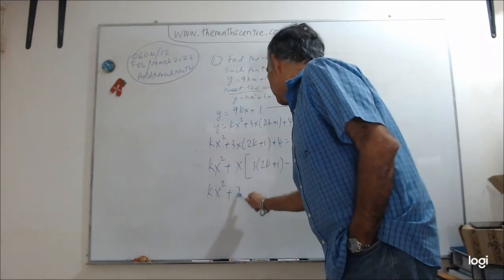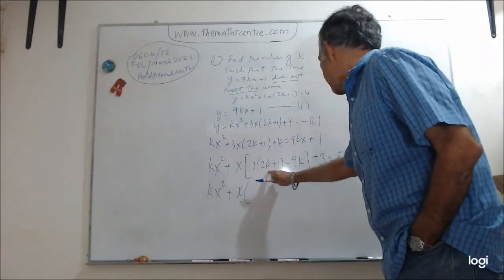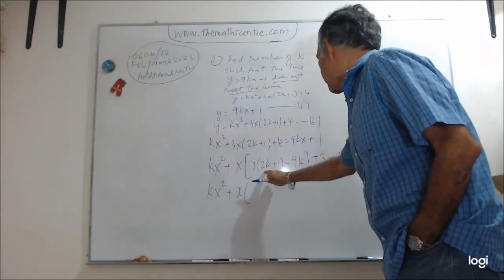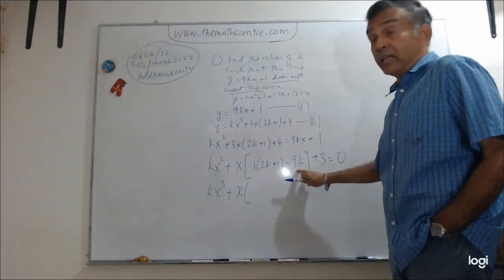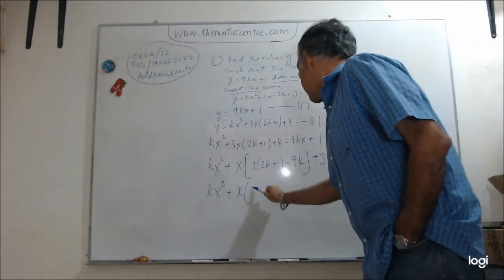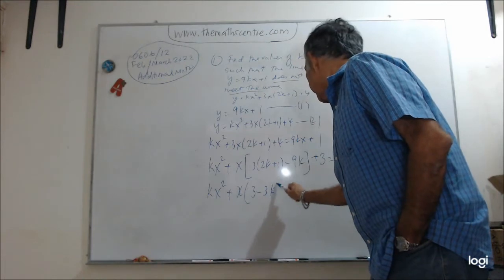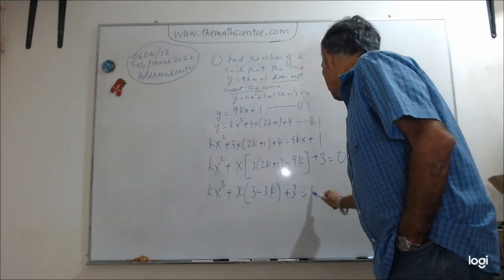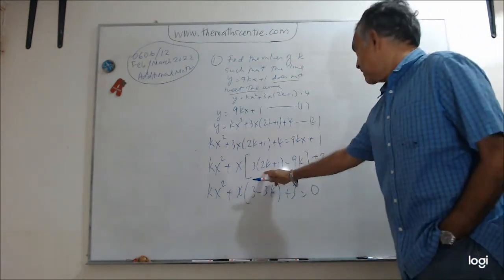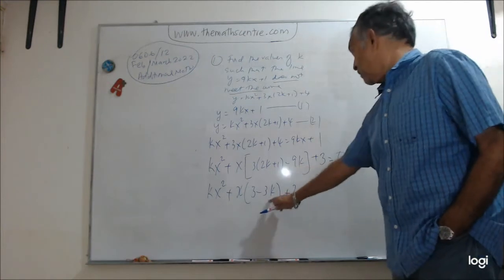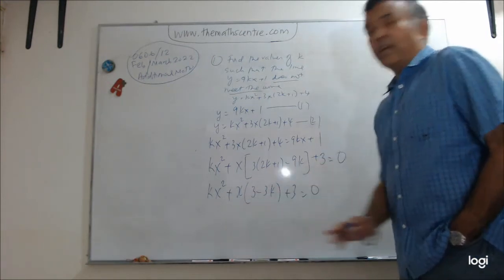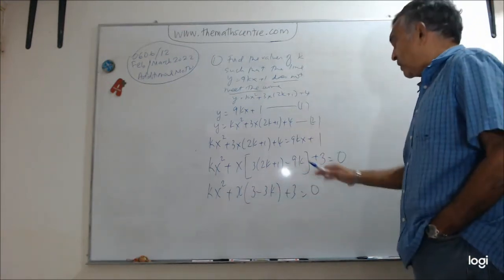So I have a quadratic equation. Maybe I should clean this up a little bit. kx squared plus x. Let's see. I have a 6k, hang on. I have 6k minus 9k is minus 3k. So I can write it as 3 minus 3k plus 3 equals to 0. Let me just check that. 6k minus 9k is minus 3k. Good. And then I have 3 times 1. Excellent.